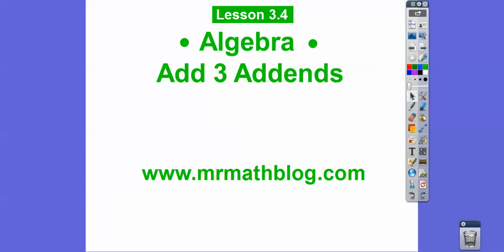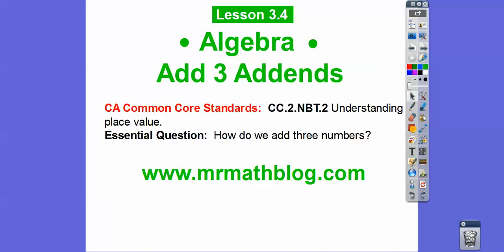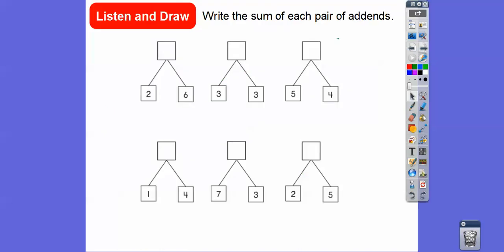Hey folks, here we're going to add three numbers together. This is called add three addends. Addends are just numbers that we're adding together. And so for awesome teachers, there's our common core strand. And so how do we add three numbers?